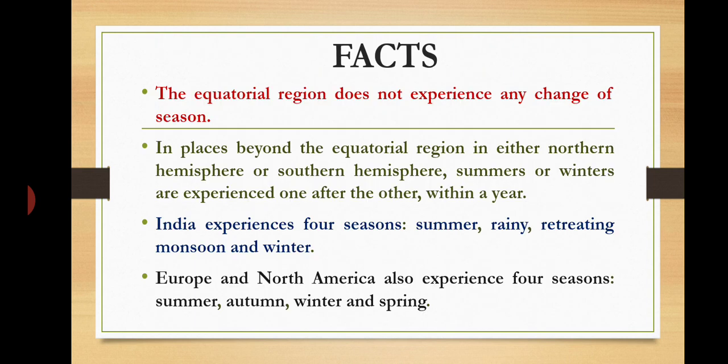Some key facts: the equatorial region does not experience any change of season. In places beyond the equatorial region, in either the northern or southern hemisphere, summer and winter are experienced alternately within a year. India experiences four seasons: summer, rainy, retreating monsoon, and winter. Europe and North America also experience four seasons: summer, autumn, winter, and spring.